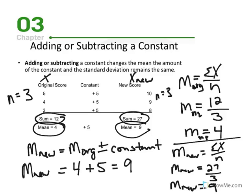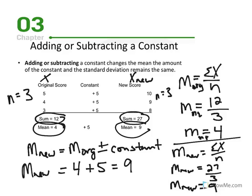Instead of recalculating from all raw scores, we can simply apply the rule: the new mean equals the original mean plus or minus the constant. The original mean was 4, we added a constant of 5 to all scores, so the new mean equals 9. This shortcut works whenever we may not have the raw scores in front of us.